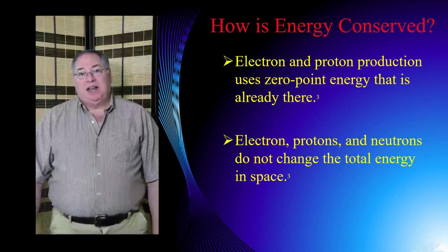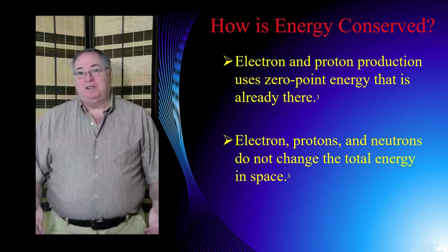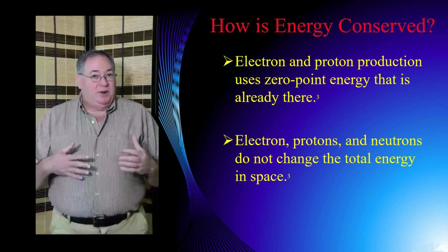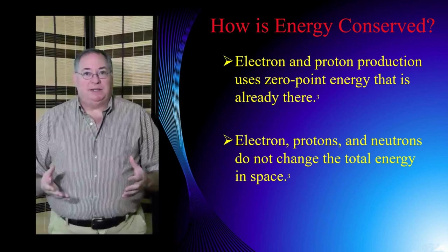So the answer to your question, how is energy conserved? It comes from the zero-point field. Electrons and protons can be produced without any outside source of energy. And not only that, we can consider that they don't actually change the amount of energy in free space. And when a proton and electron combine to make a neutron, it still doesn't change the amount of energy in free space.